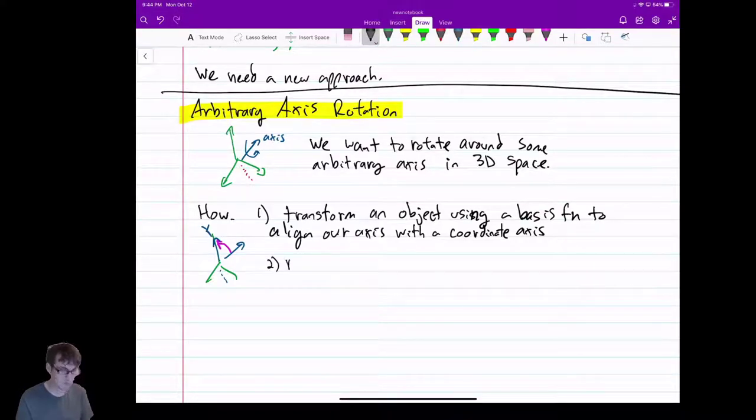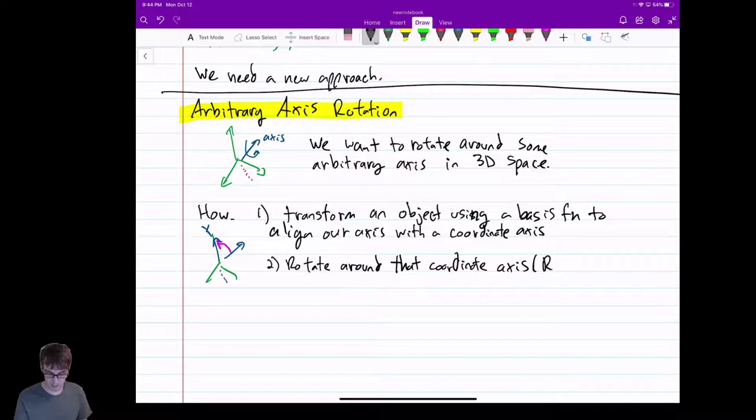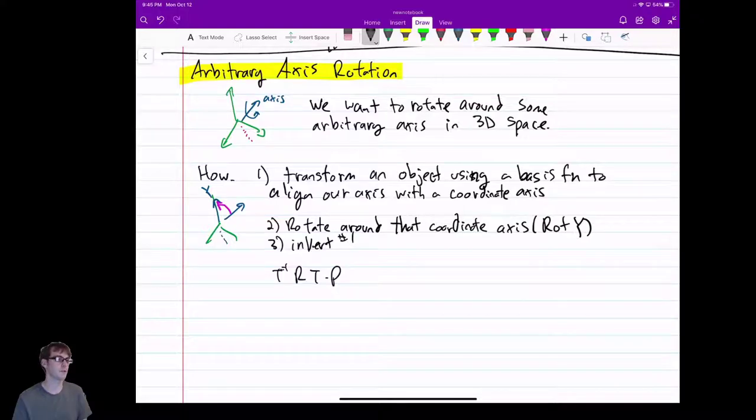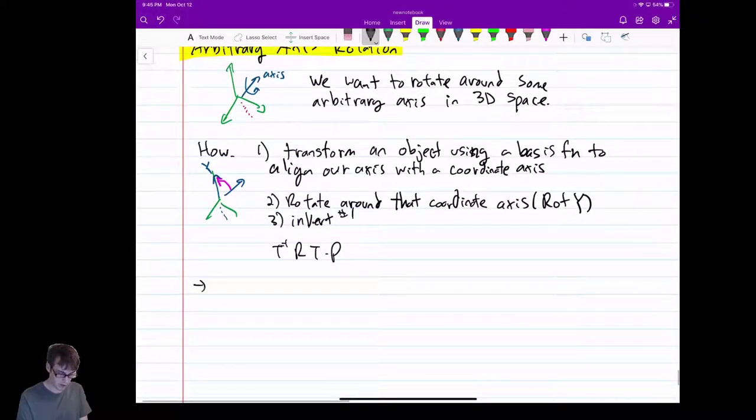Imagine I can take this axis, and I want to transform that so it's actually lined up with my y-axis, for example. And then I can rotate around y. If I do that, I can just rotate that coordinate axis. In this case, I could do a rotate y, and then I invert number one. So I do a transform, rotate, and that's an inverse against my point.